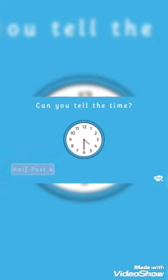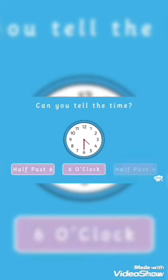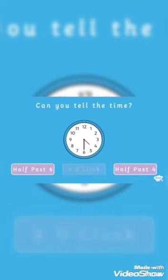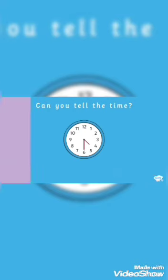What is the time now? Is it half past 6, 6 o'clock, or is it half past 4? It's not 6 o'clock because the minute hand isn't pointing to 12. It's not half past 6 because both hands would be pointing at 6. It's half past 4! Well done. Check out more of our fun videos to explore other areas to help your learning.